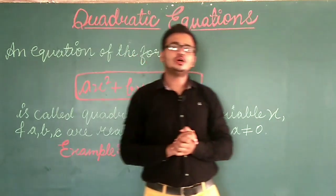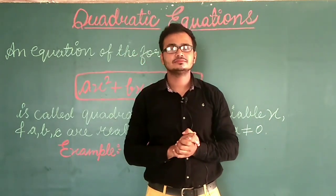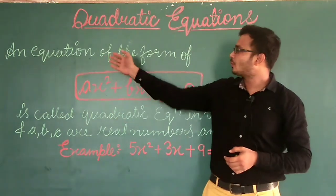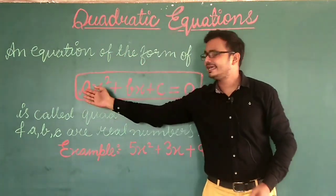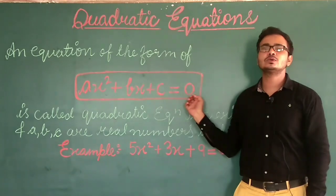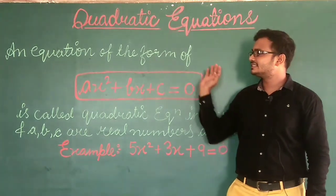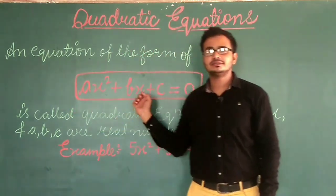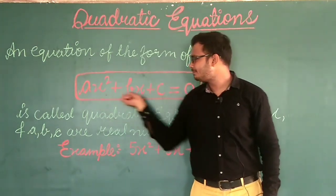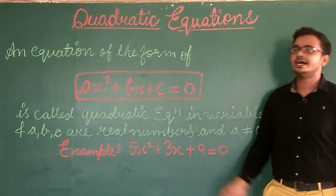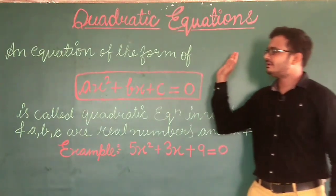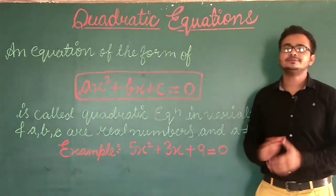First we will discuss what is a quadratic equation. A quadratic equation is an equation of the form AX square plus BX plus C is equal to 0. This is the form of a quadratic equation where X is a variable and A, B, C are real numbers.